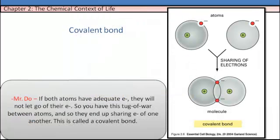If both atoms have adequate electrons, they will not let go of their electrons. So you have this tug-of-war between atoms, and they end up sharing electrons with one another. This is called a covalent bond.